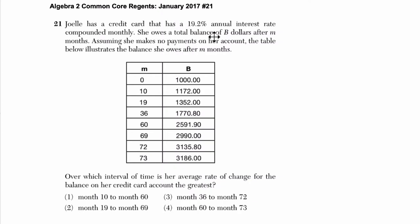She owes a total balance of B dollars after M months. So B is the amount she owes, M is the amount of months that have passed. Assuming she makes no payments on her account, the table below illustrates the balance she owes after M months. Okay, so as the months go on, she's not paying her credit card. The amount she's owing is increasing from $1,000 all the way up to over $3,000. And they want to know what? Let's see.